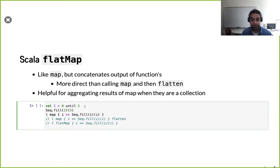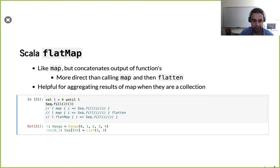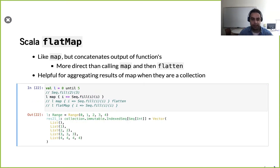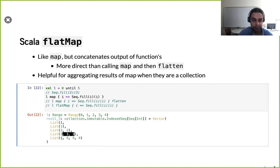Here in a hypothetical example, we make a little collection to play with. As a reminder, the fill operation, given a number of elements and an initial value, gives you that many copies. So if we take the numbers zero through four and apply fill, zero zero times, one one time, two two times, three three times, four four times — you can see how those elements were each mapped to a sequence.